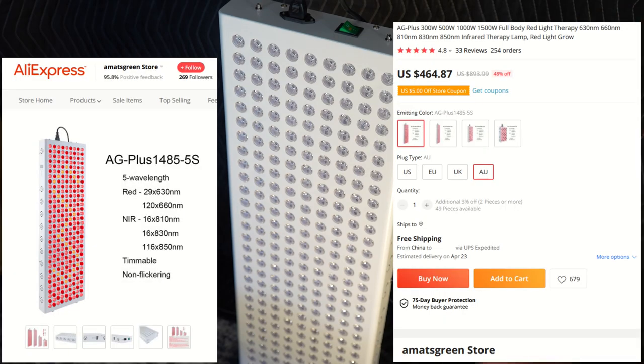This is the AG Plus 1485 5S model. I got it for about $500 on AliExpress, and that includes shipping costs. That's a really good price for a panel that's about 3 feet tall,